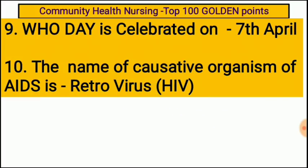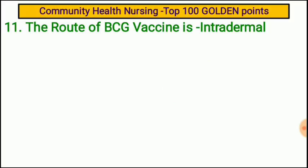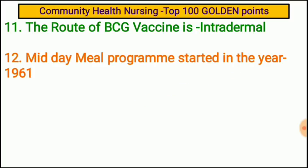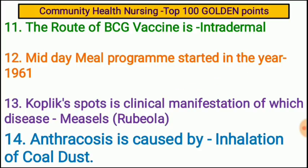The causative organism of AIDS is retrovirus, which is HIV. The route of BCG injection is intradermal. Mid-Day Milk Program started in the year 1961. Koplik spots is a clinical manifestation of measles disease; measles is also known as rubeola.